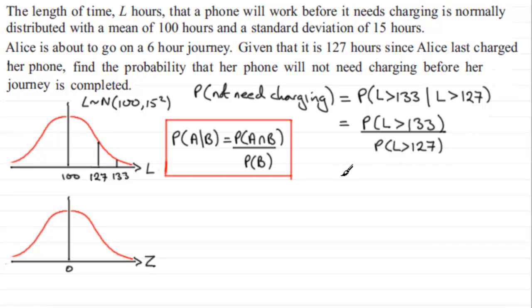Now, if we work out the probability that L is greater than 133, that's going to be represented by this area here. And we're comparing that with the probability that L is greater than 127, all of this area here. So we're comparing essentially this proportion to all of this proportion. Conditional probability.